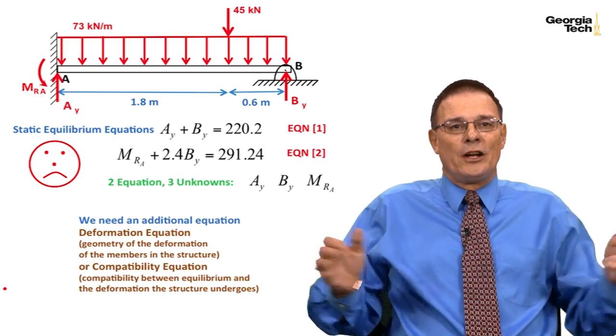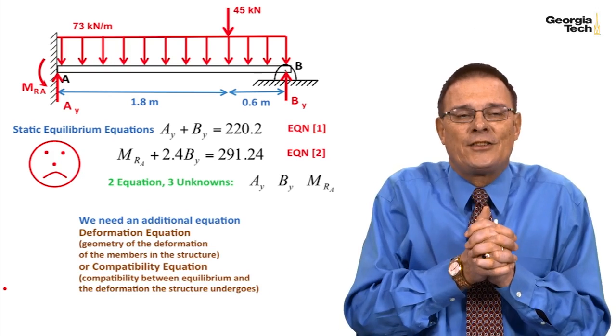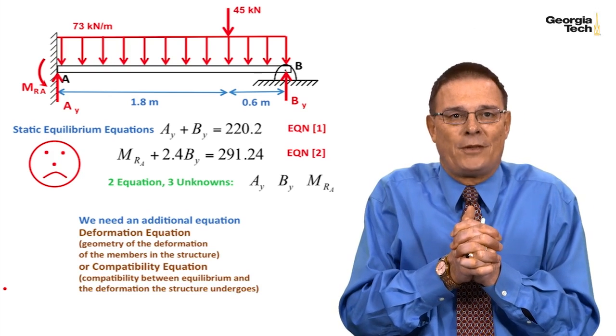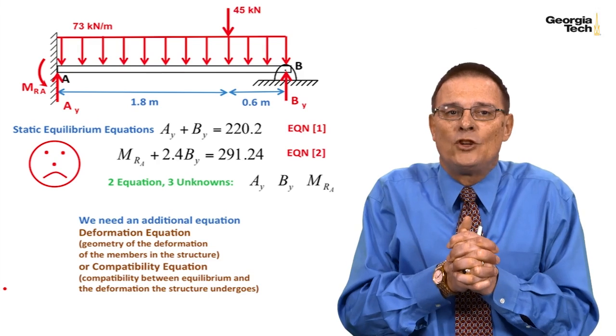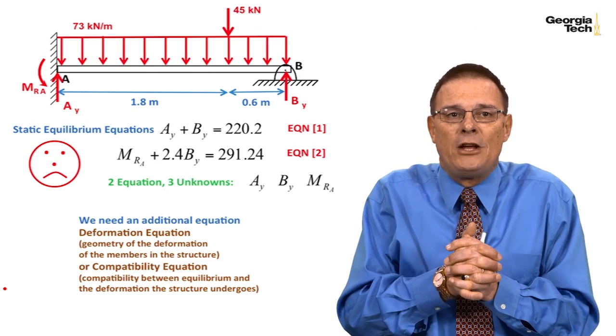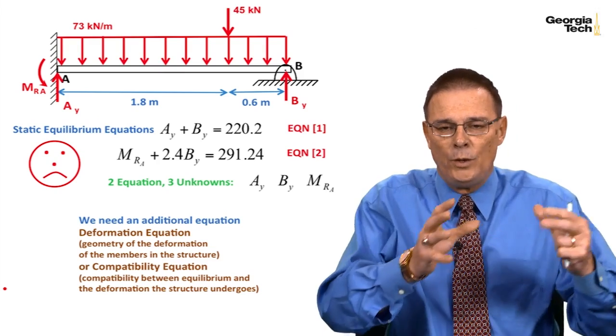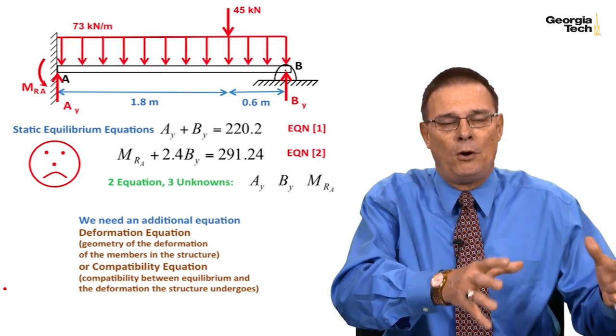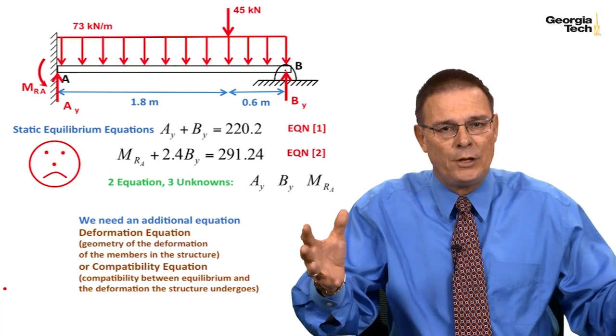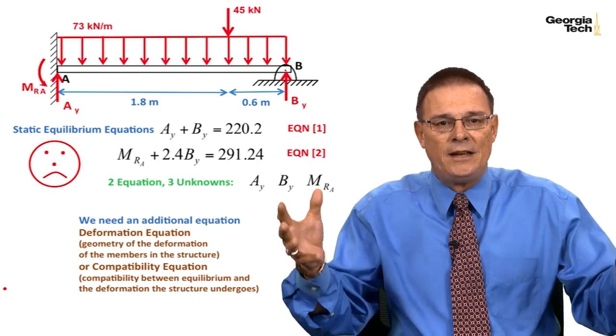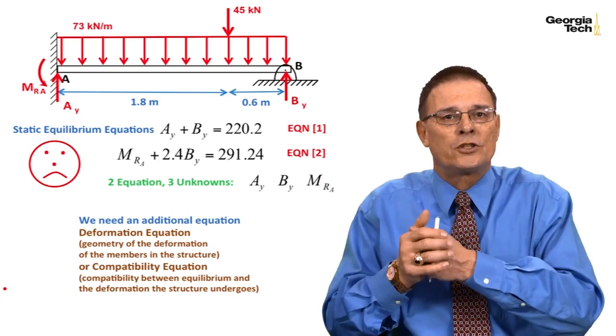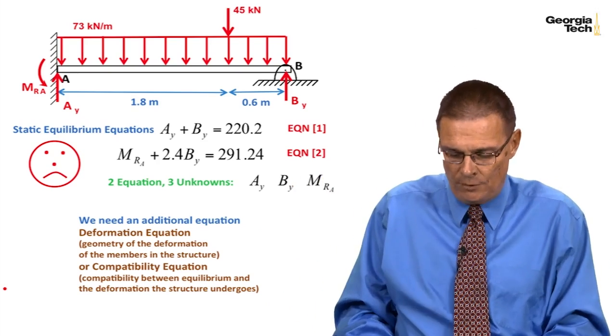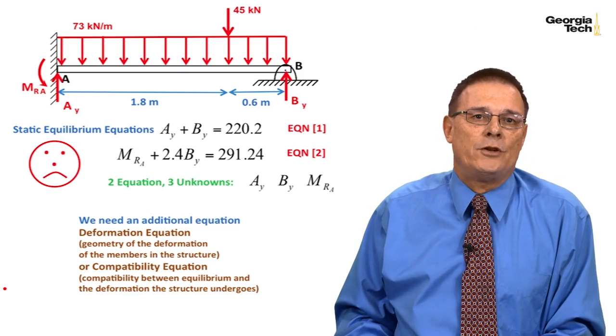If you recall my earlier classes, this is a statically indeterminate structure. We're going to need an additional equation as the deformation equation or what we call the compatibility equation. We did this in my Mechanics and Materials Part 1 course for an axial loading situation, in my Part 2 course for a torsional loading situation, and now we're doing it for a beam bending situation.